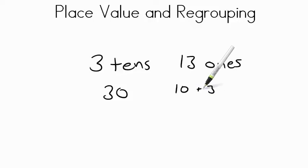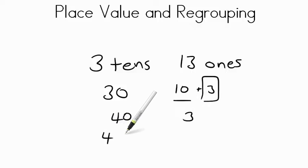Well, 3 tens is the same as 30 and 13 ones is really 10 and 3. So if we have 10 and 3, we have a 10 here. So can we change this around so that we have more tens and only a few ones? Well, yes we can. We now can add that 10 to these tens to make it 40 and we have just this 3 left over.